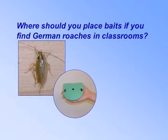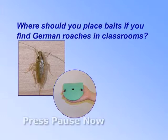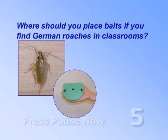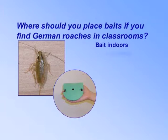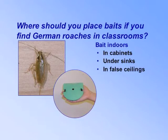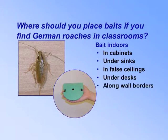Where should you place baits if you find German roaches in classrooms? For German cockroaches, place baits indoors: in cabinets, under sinks, in false ceilings, under desks, along wall borders, and near doors.